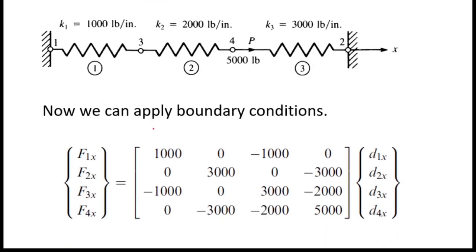Here we apply boundary conditions. Boundary conditions are the known data we use to determine unknown data, so we input our known data here. First we start with forces. F1X means force on node 1. As you can see, nodes 1 and 2 are fixed, so there is a reaction force on nodes 1 and 2. But we don't know what those forces are, so I will keep F1X and F2X as unknowns.